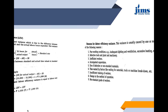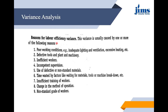Reasons for labor efficiency variance include: poor working conditions such as inadequate lighting, ventilation, or excessive heating; defective tools, plant, or machinery; inefficient workers; incompetent supervision; use of defective or non-standard materials; time wasted by factors like waiting for materials, tools, and machine breakdown; insufficient training of workers; change in the method of operation; and use of non-standard grade of workers.